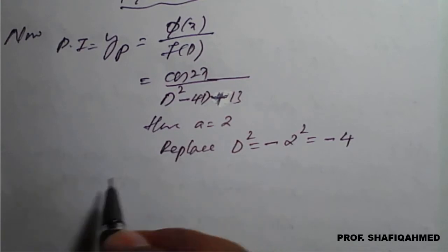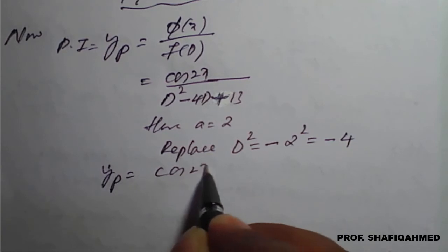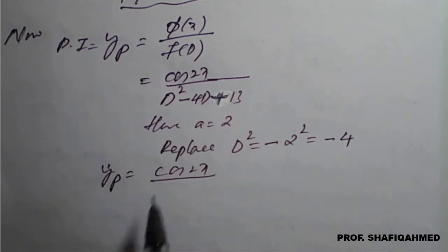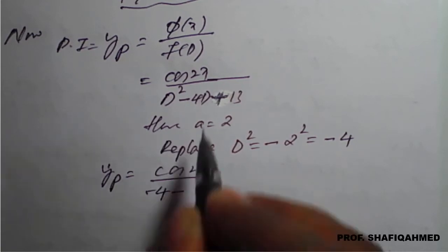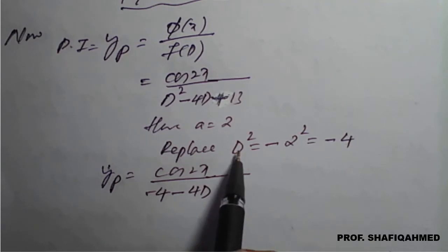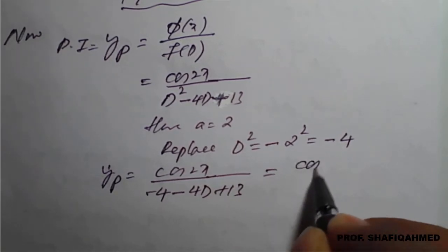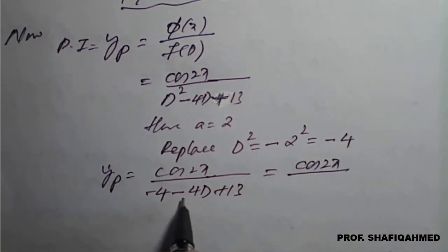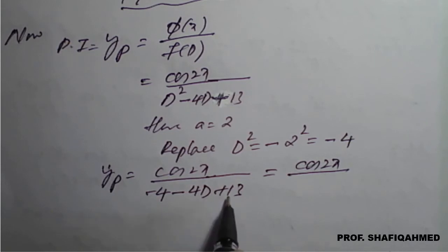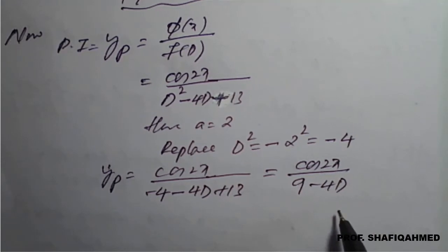After substitution, yp becomes cos of 2x divided by minus 4 minus 4d plus 13. Simplifying: minus 4 plus 13 gives plus 9, keeping 4d as it is since we only replace d squared, not d. So the denominator becomes 9 minus 4d, and the denominator still contains d.